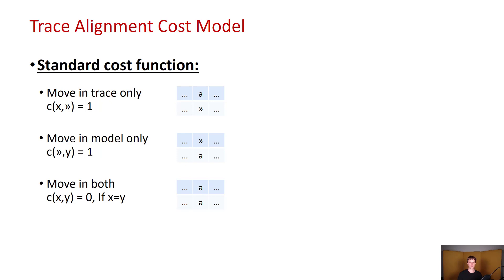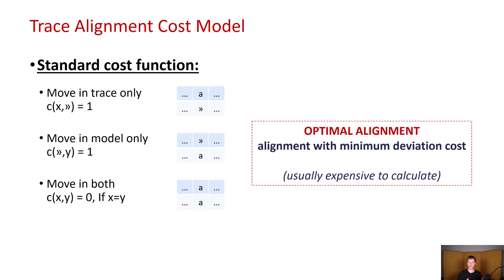However, those costs can be different. They can be based around specific activities, and the costs that you are going to use are going to heavily affect the alignments that the algorithms are going to produce. Also, we have optimal alignments. Those are the alignments with minimum deviation cost. Usually those are however expensive to calculate. And as I mentioned before, note here that the optimal alignment is actually going to depend on the cost function that you use.